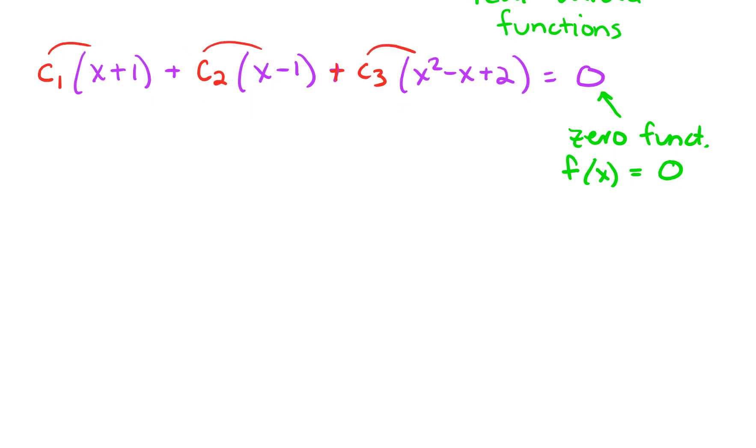When we do that, we get C1 times x plus C1 plus C2 times x minus C2. We get C3 times x squared minus C3x plus 2 times C3 equals zero.